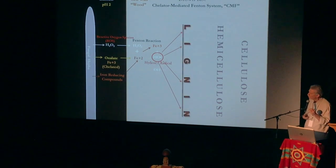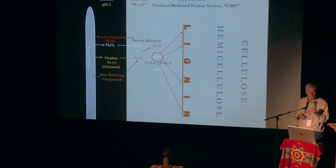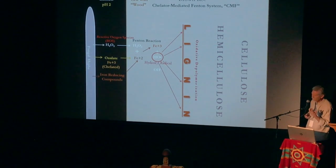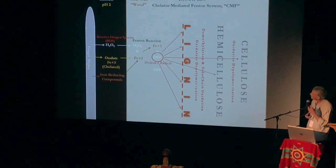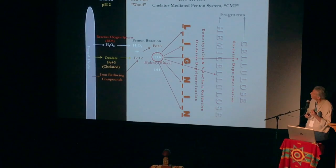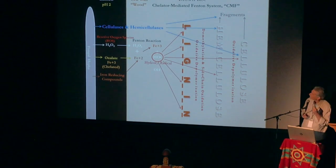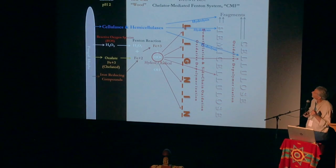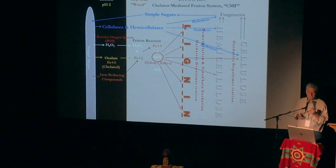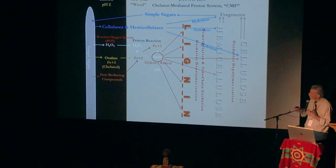The hydroxyl ion is going to go to the lignin and change it — bleach it, turn it that brown color you see in the brown rot. And it's going to do this oxidative depolymerization. It's also going to go to the cellulose and hemicellulose, depolymerize those, change their color, and make fragments. Those fragments are then attackable by the cellulases and hemicellulases, which hydrolyze them. Now the lignin is out of the way, the food is available, and simple sugars can be absorbed. That's brown rot — brute force with this hydroxyl ion produced through the Fenton reaction.